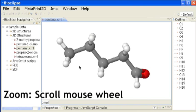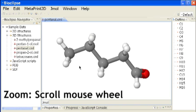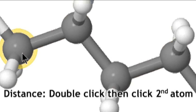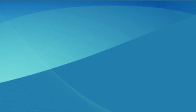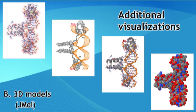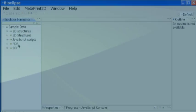To zoom in and out, scroll the middle mouse wheel. To measure a distance, double-click on one atom then click on a second atom. To measure an angle, click a third atom. JMol provides additional visualizations.